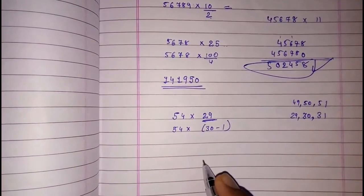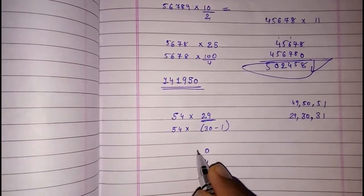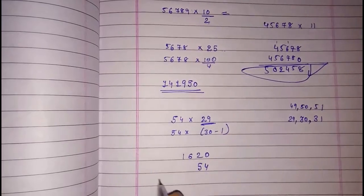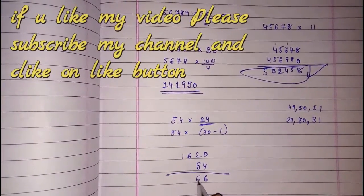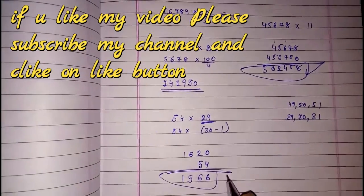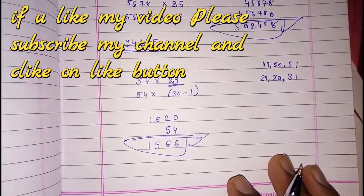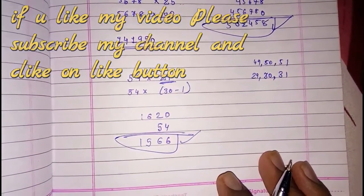What we have to do? Instead of 29, directly we have to write 54 into 30 minus 1. 54 ones are 54, and 3s are, so first we will put 0 and 12 carry 1, 15, 16. Now subtract this: 1566 minus 54. You will think that these tricks are very simple, but these tricks are very useful when you are doing your calculation. It will save you a lot of time.